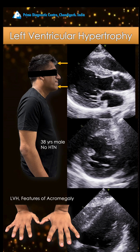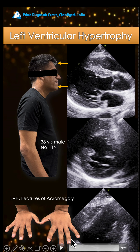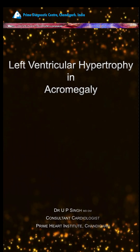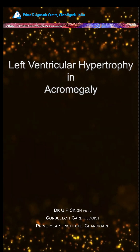When you watch closely, there are all the features of acromegaly. You see the hands are boxy, the fingers are broad, the chin is protruded, and there is a boxy frontal bone. Why does hypertrophy happen in acromegaly?